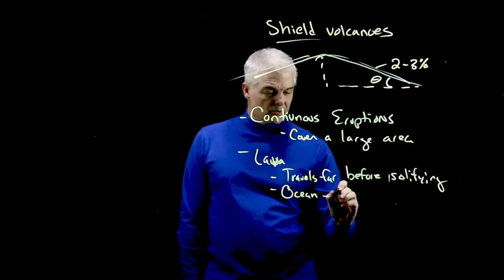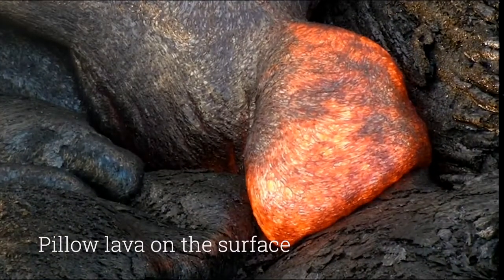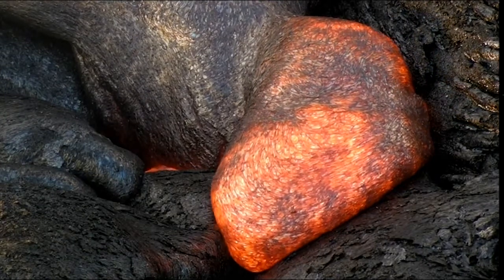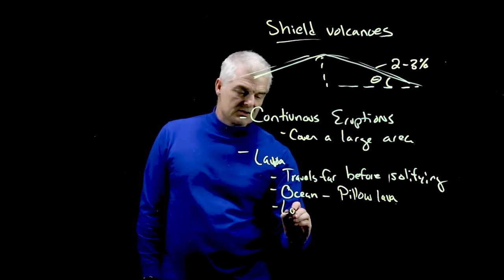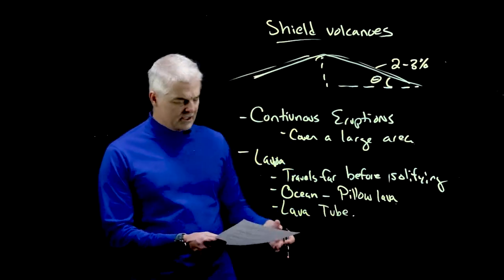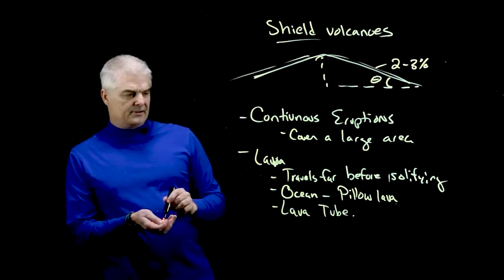And when it hits the ocean it makes a really cool type of lava they call pillow lava. Looks like pillows. It freezes on the outside so quick and then the inside doesn't. It's like these big balls. It's awesome. And I think one of the coolest things you can see at one of these is called a lava tube. Now a lava tube is really cool.